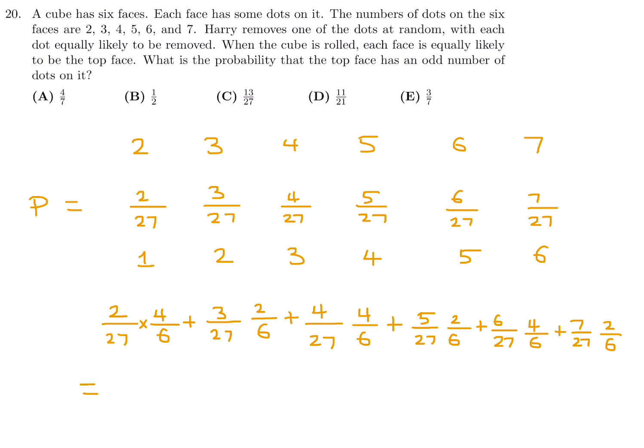Now you do this math, it looks like the denominator for everything is just 27 times 6. And then this is going to be 8 plus 6 plus 16 plus 10 plus 24 plus 14. And that looks like, when you add it all up, 78 over 27 times 6. 78 divided by 6, I believe, is 13. So you're just left with 13 over 27. Number 20, the answer is C.